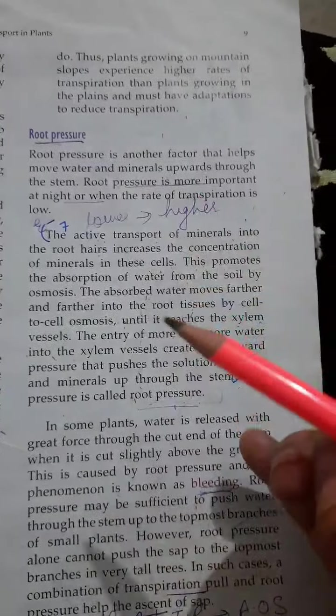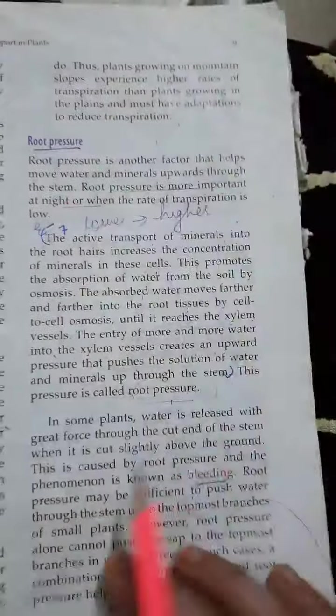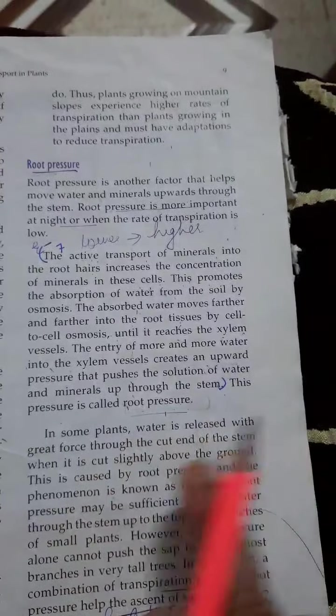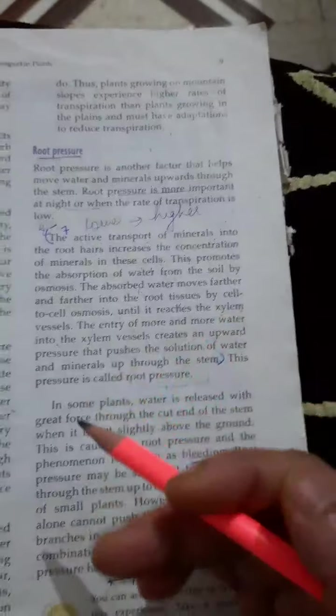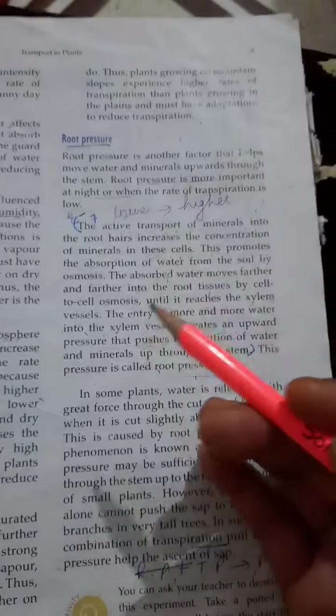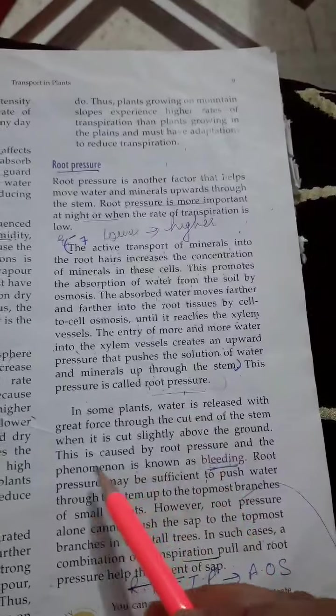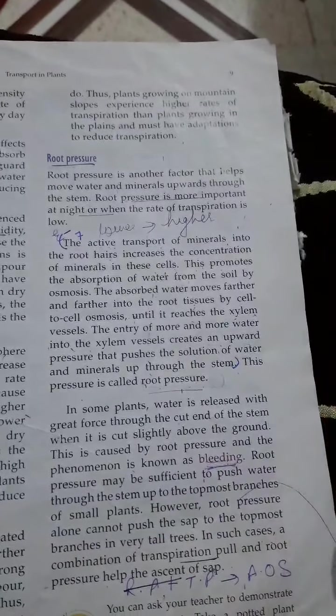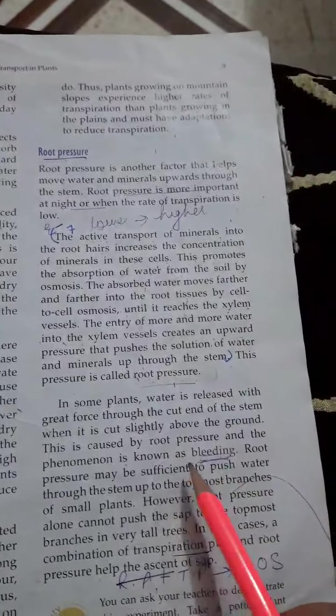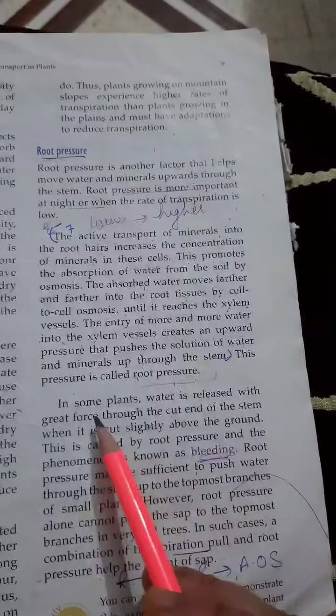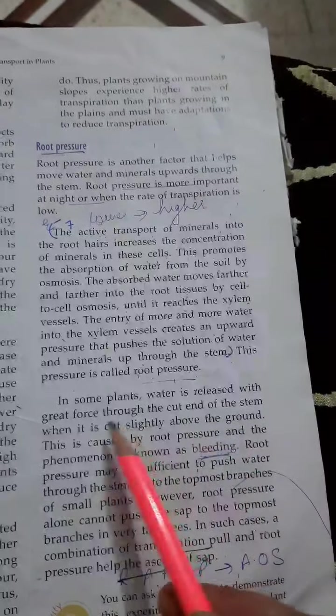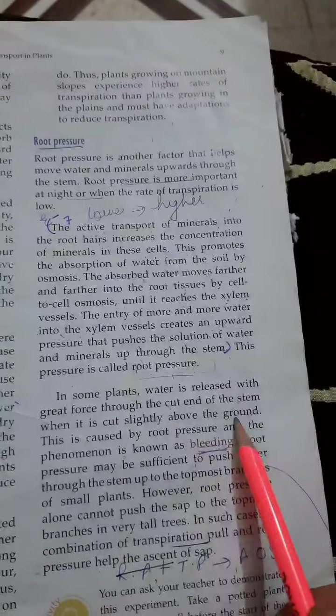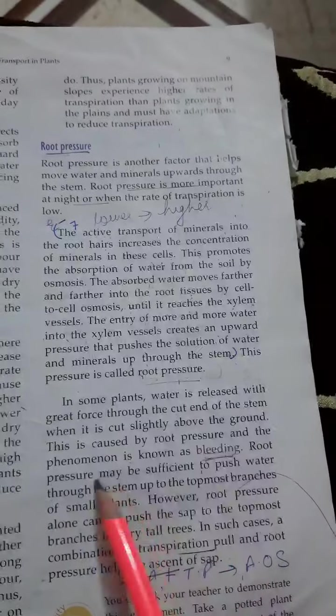In some plants water is released with great force. When we cut the main stem above the ground level we will see the water comes out from high pressure. That phenomenon is known as bleeding. Water is released with great force through the cut end of the stem when it is cut slightly above the ground, caused by root pressure.